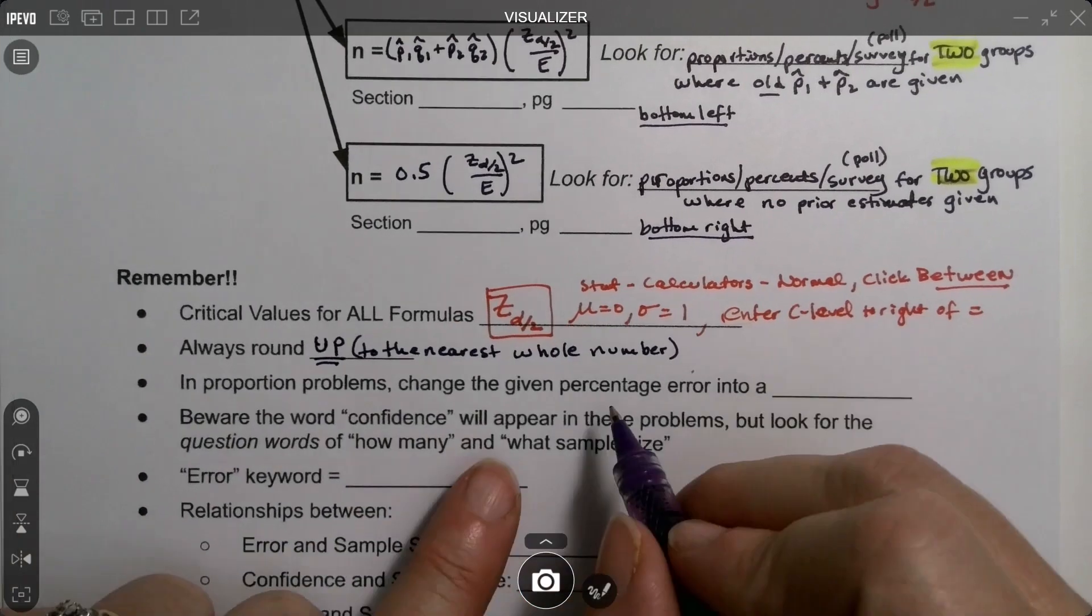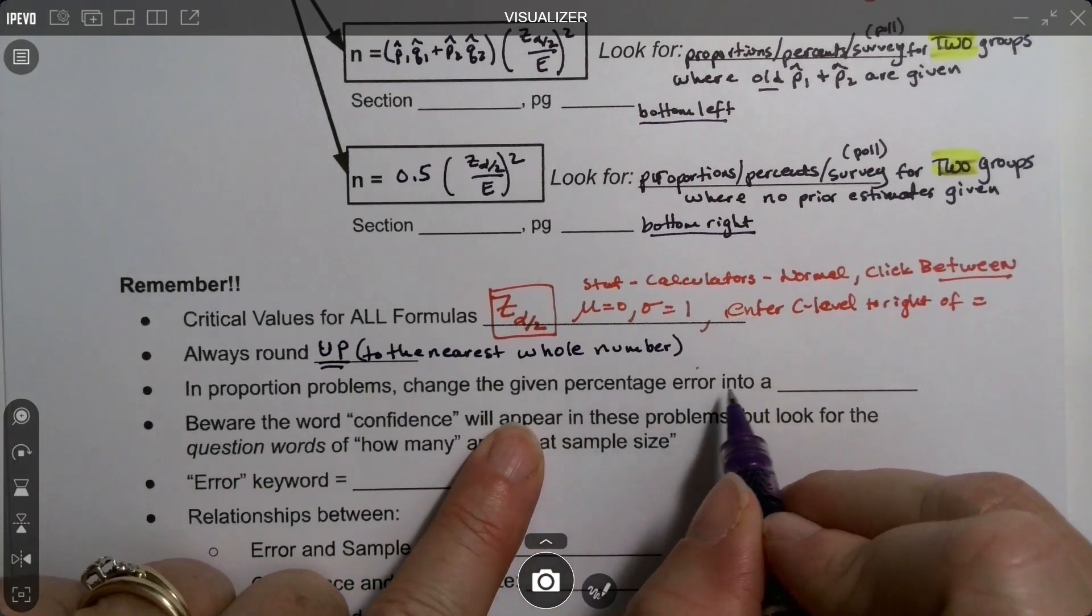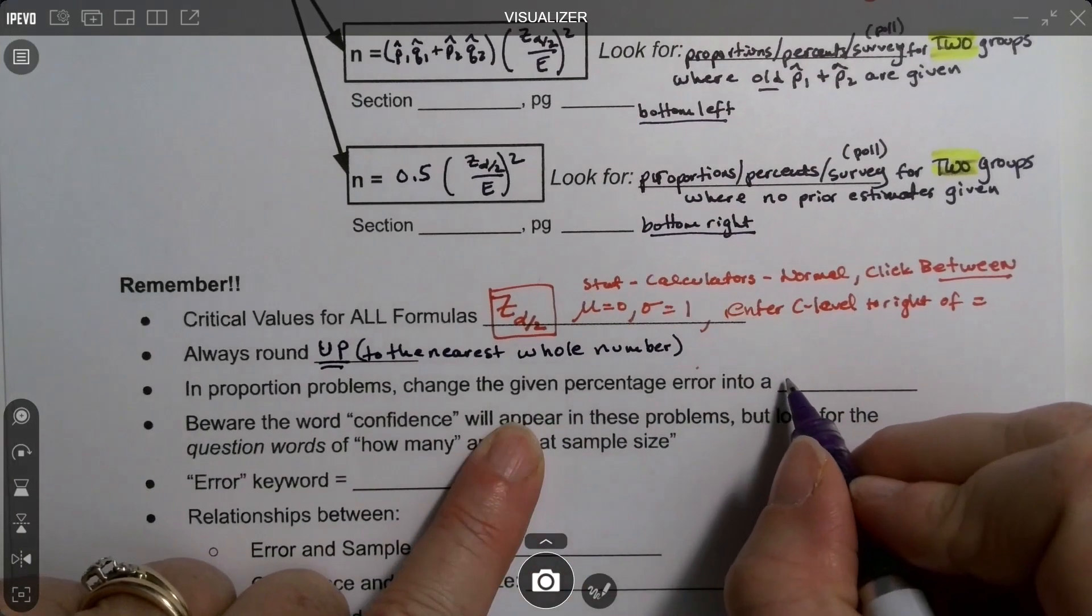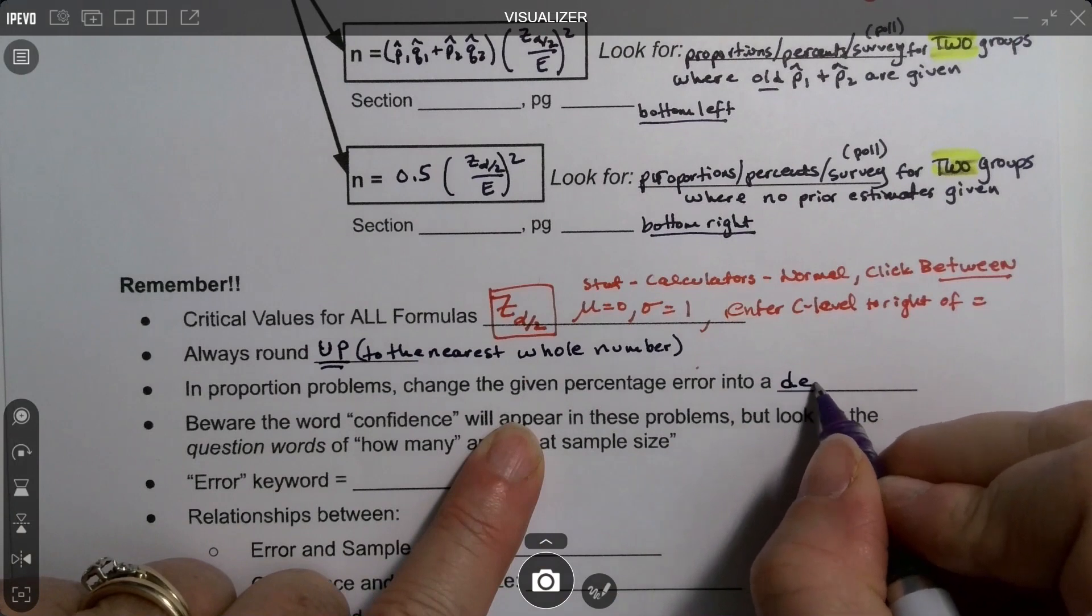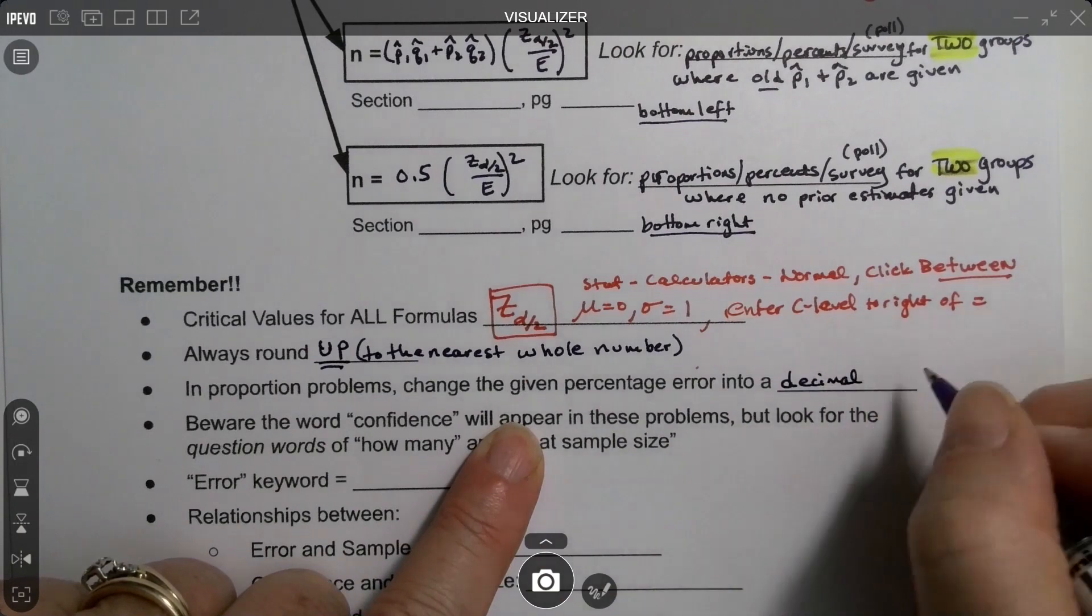In proportion problems, the given percentage error, change it into a decimal. So, let me give you a little example over here so we can all see it.